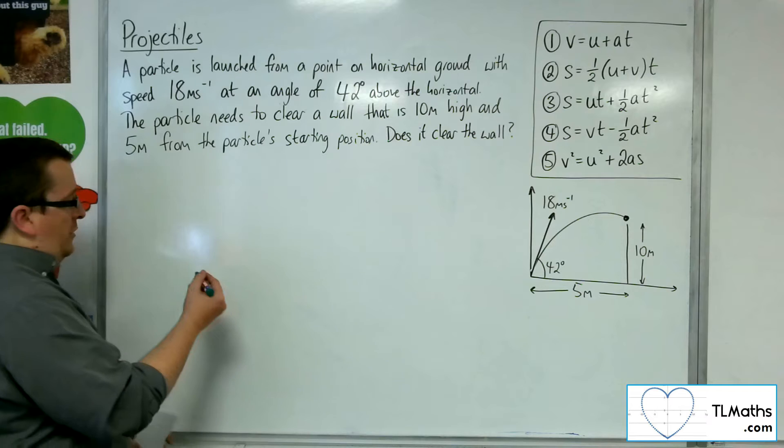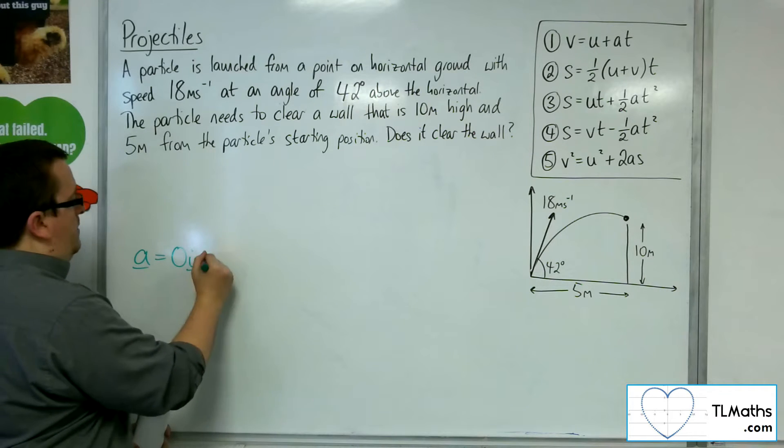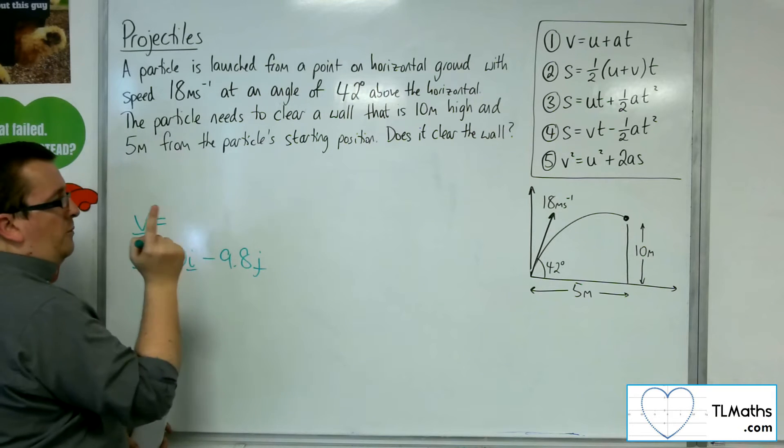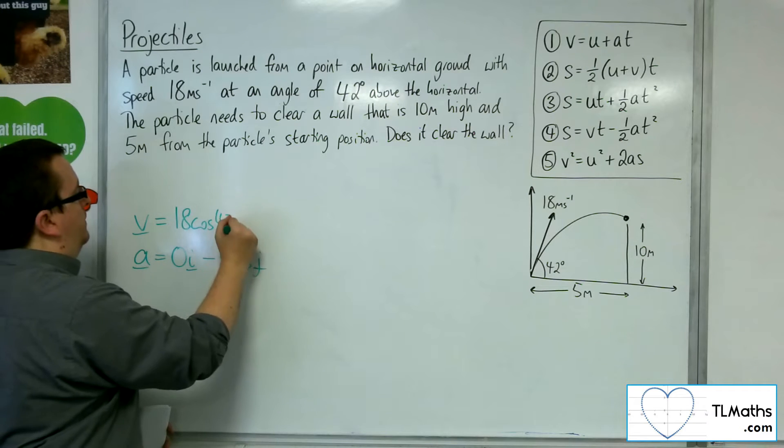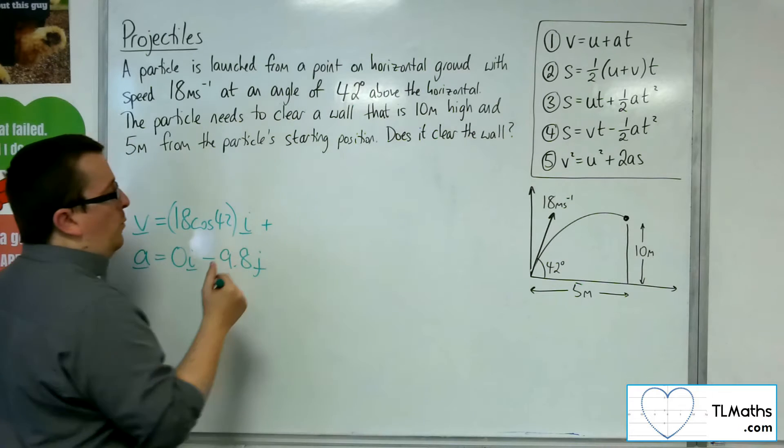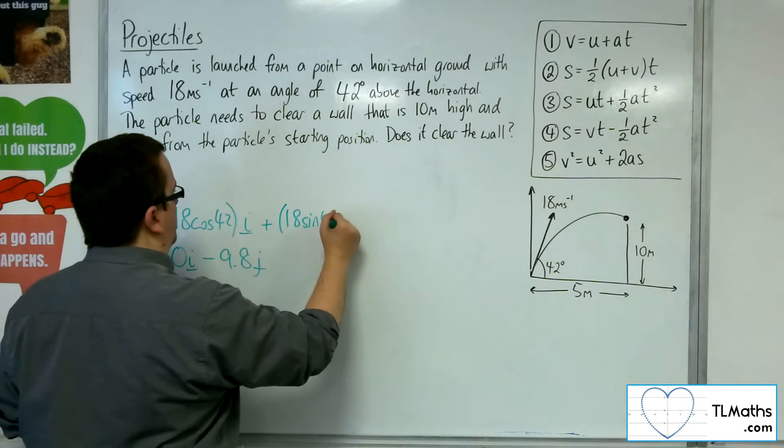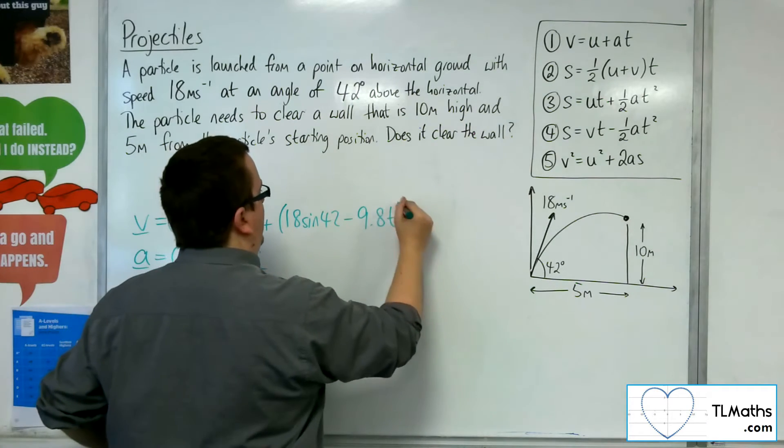Let's start off with writing down the acceleration is 0i minus 9.8j. I want to integrate this, so I'm going to get 18 cosine 42 as the initial velocity, i. And we've got the initial velocity for the y component is 18 sine 42. And then I integrate the minus 9.8, so minus 9.8t, j.